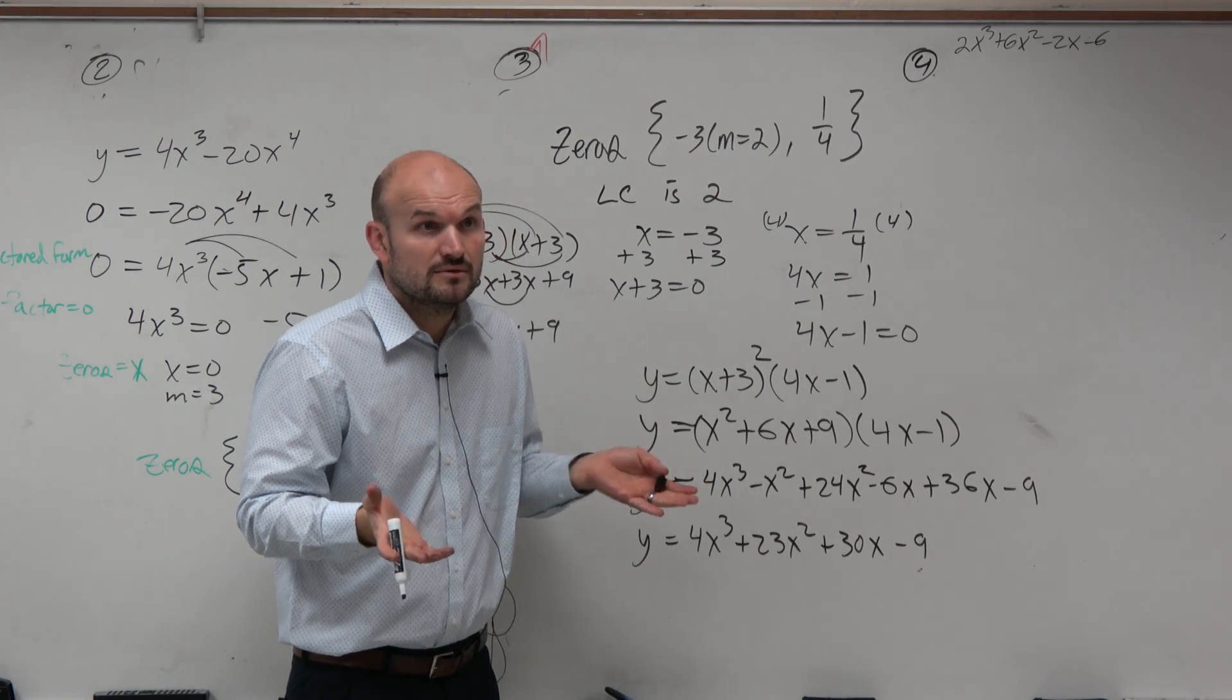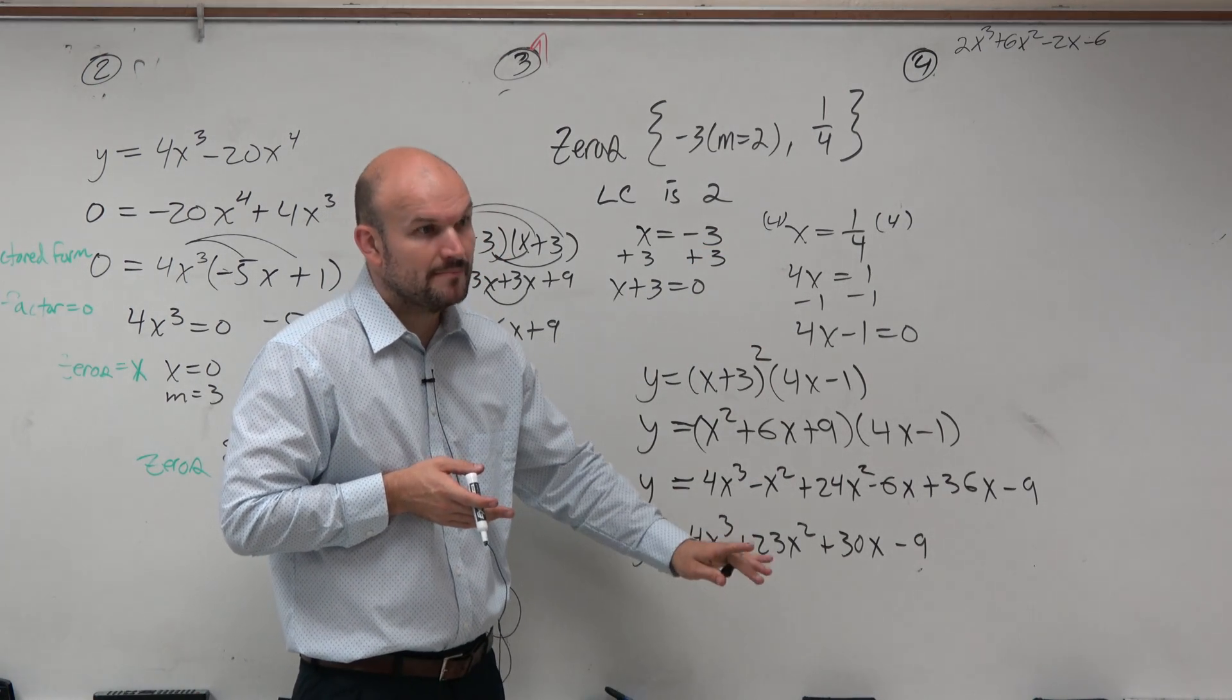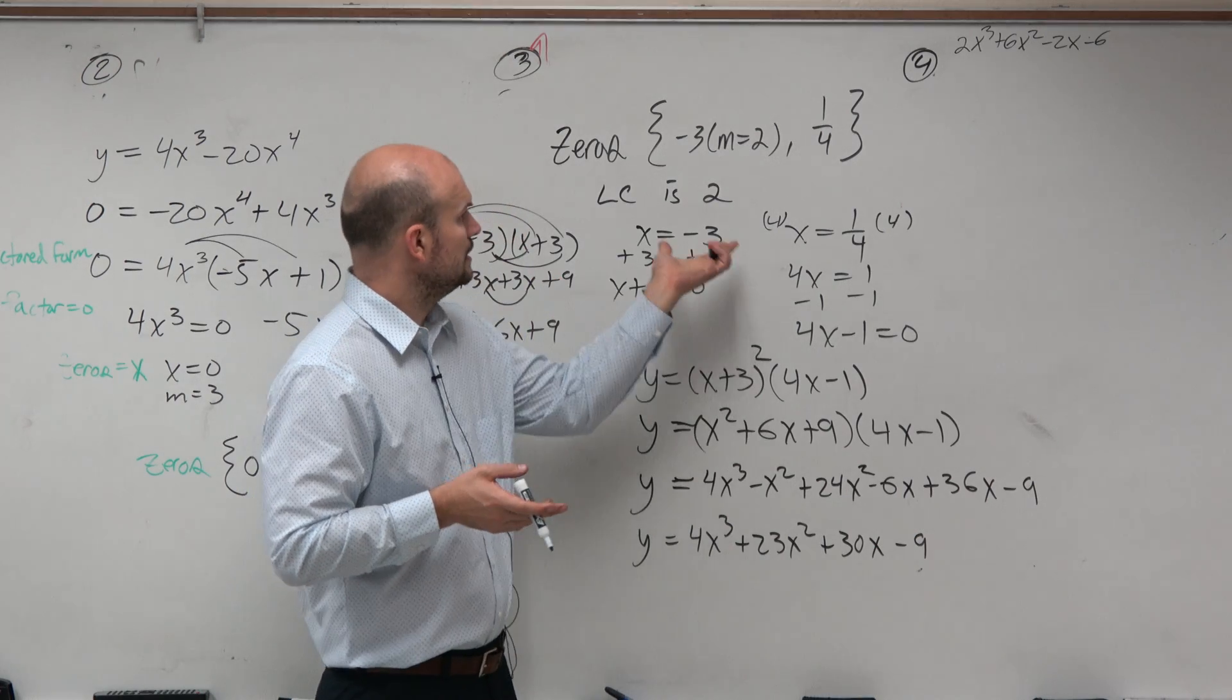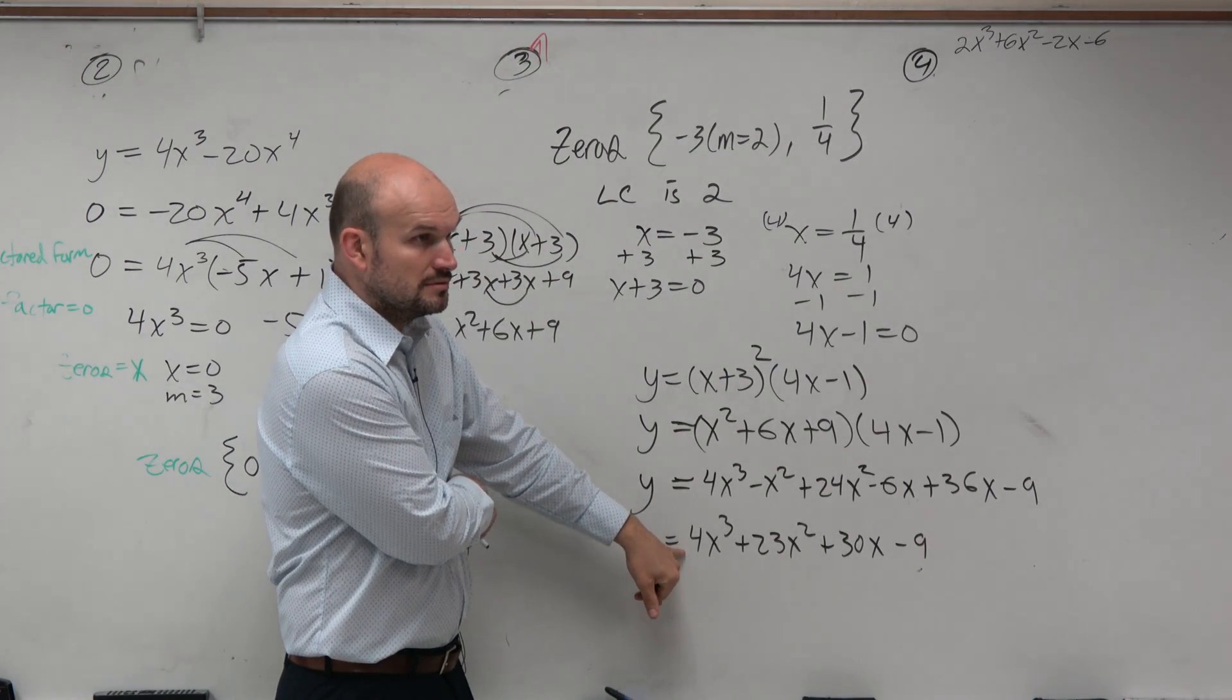Are we done? We got the polynomial, right? You take the zeros, you find the factors, and you multiply them. Yes. What's the problem? Leading coefficient. Crap. The leading coefficient's 4. We need it to be 2.